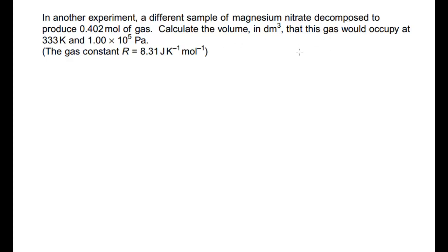Okay, final question then. In another experiment, a different sample of magnesium nitrate decomposed to produce 0.402 moles of gas. Calculate the volume in decimetres cubed that this gas would occupy at 333 Kelvin, and 1 times 10 to 5 Pascals, R value given again. The reason I chose this is because it's different. We're not calculating moles. We're now calculating volume. So, exactly as before, PV equals NRT. Therefore, volume V equals NRT over P. Always rearrange it. Make it clear what you are doing. End this time. 0.402. We'll just highlight the various bits of information. So, we've got moles. We've got a temperature. We've got a pressure. We're calculating our volume. And we've got 8.31.